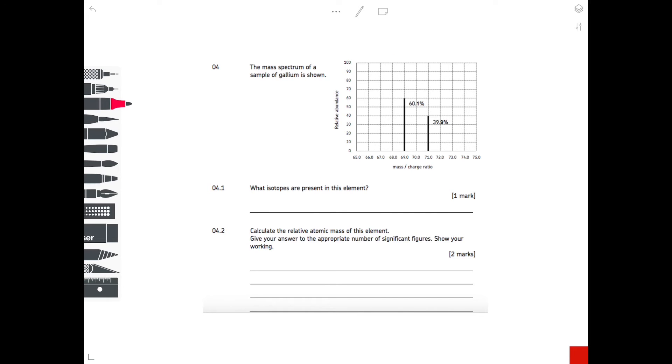So question four. The mass spectrum of a sample of gallium is shown. So here's a typical relative abundance graph that you'll be shown. What isotopes are present in this element? Do remember that an isotope is atoms of the same element with the same number of protons and a different number of neutrons. So all you have to do here is look at the masses, and that's the mass to charge ratio on the x-axis. So you simply have to write Ga to represent the symbol of gallium, and then in the top left-hand corner write those two masses: so 69 and 71. So those are the two isotopes which are present.